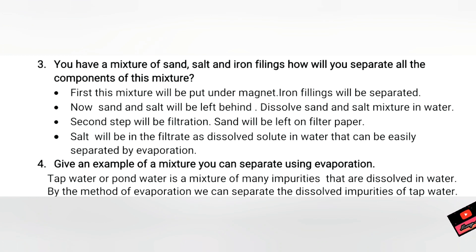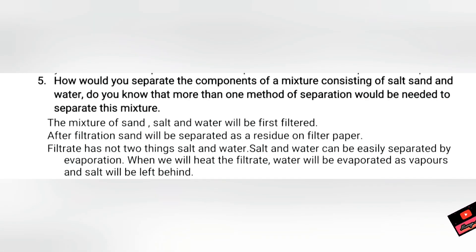Question four: Give an example of a mixture you can separate using evaporation. The answer is: Tap water is a mixture of many impurities dissolved in it. By the method of evaporation, we can separate those dissolved impurities from tap water.